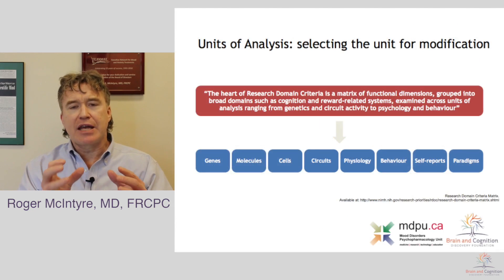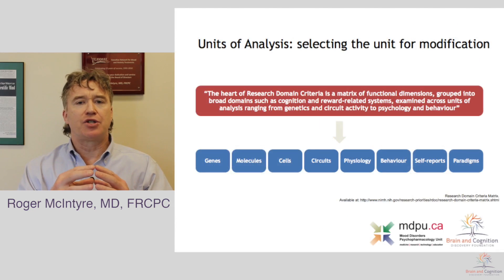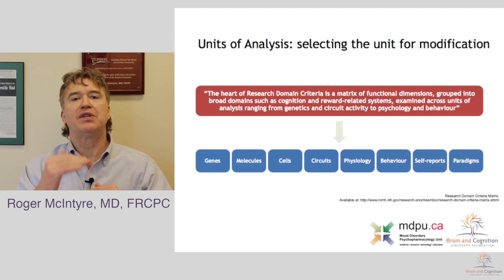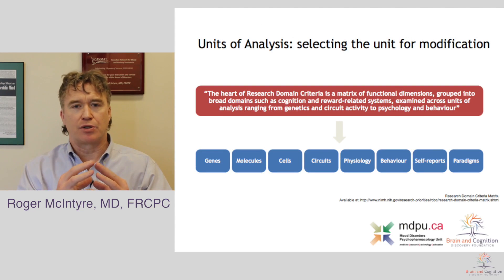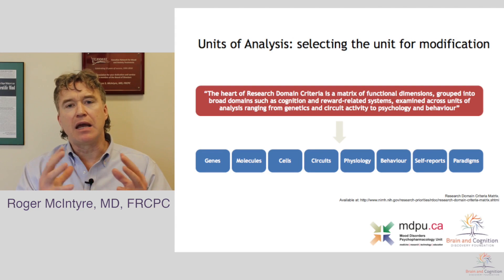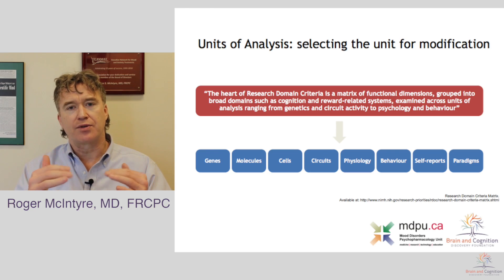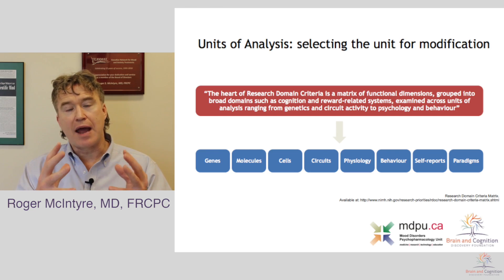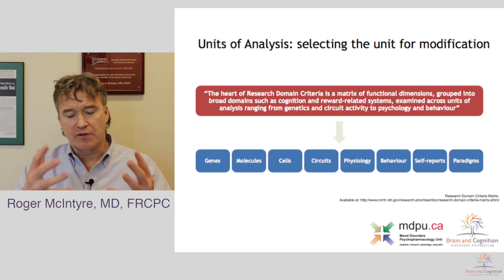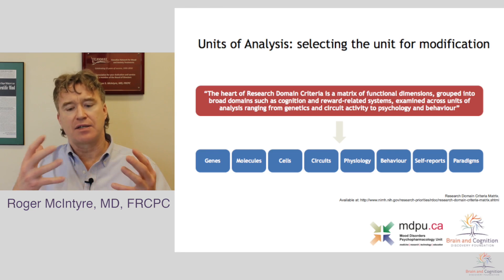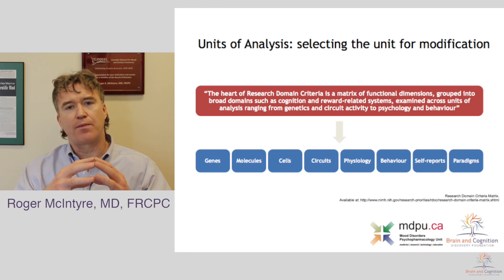One way to think about etiology is through a multi-systems approach — beginning with genetics, then moving through molecules and cells, through circuits, through networks, to observable behavior, and then into self-reports. For today's module, I'd like to spend much of our time speaking about the molecular changes and certainly many of the cellular changes we see.